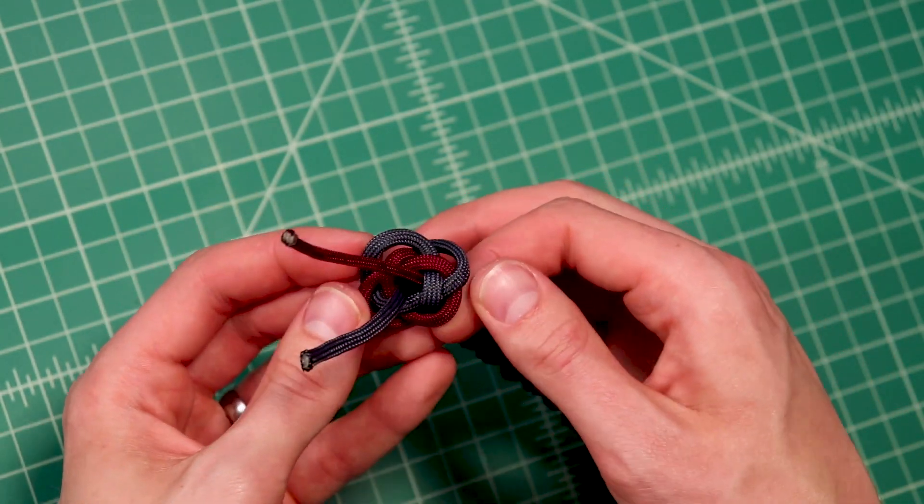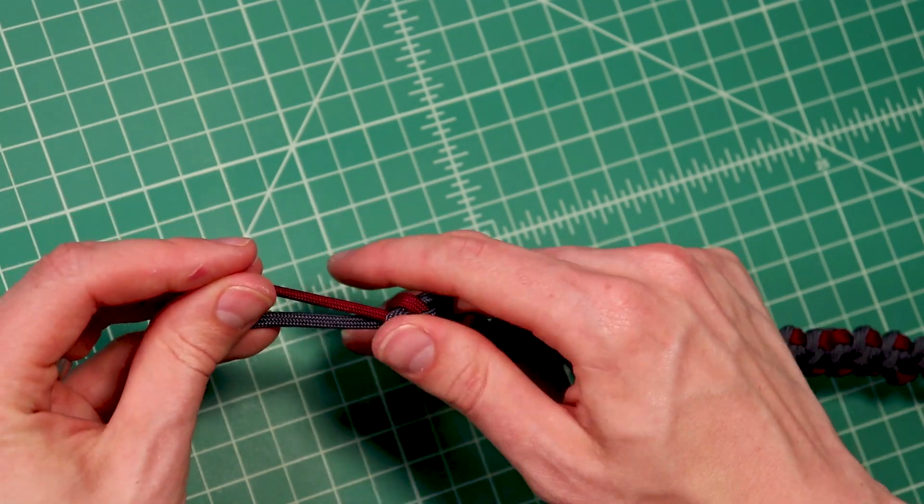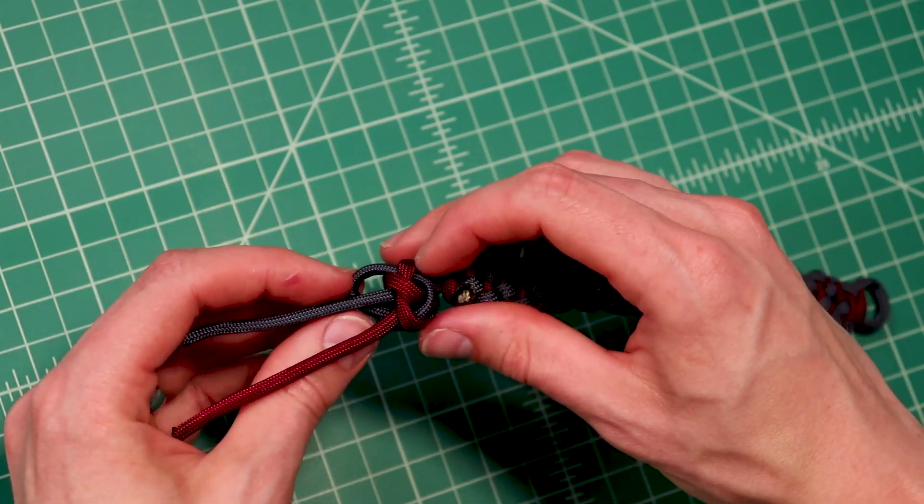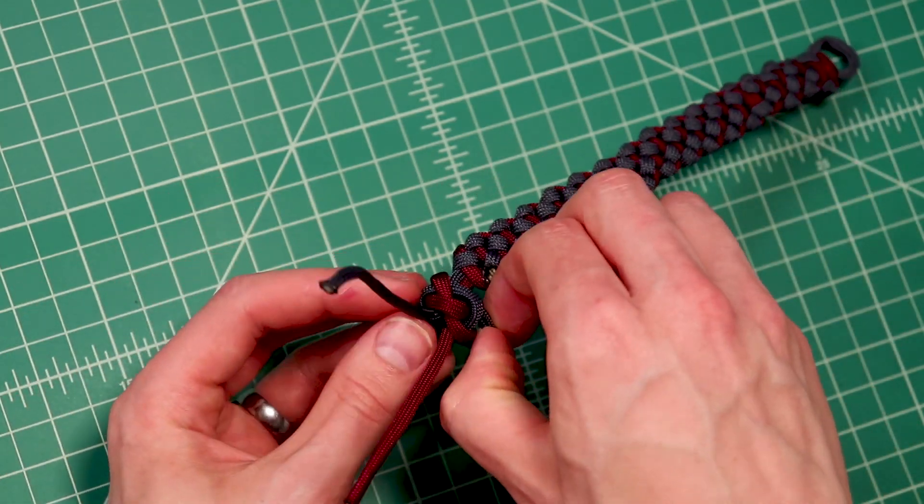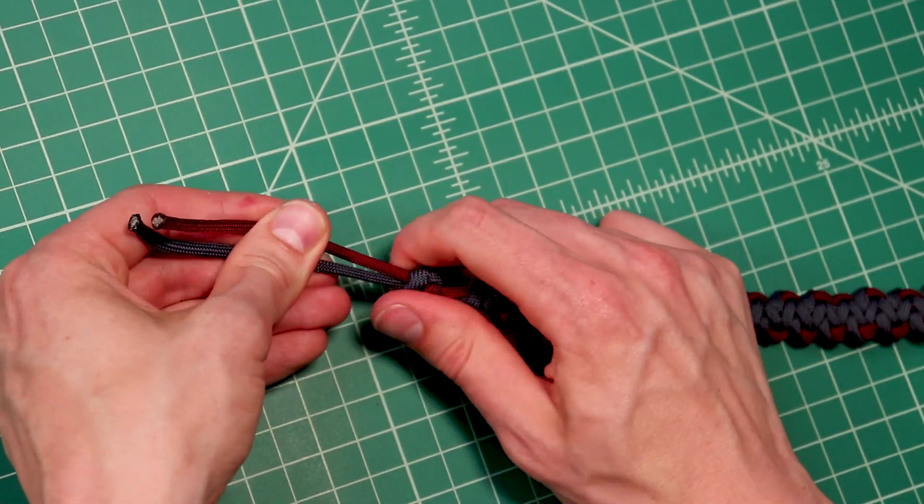Then it'll look like this. You just want to gradually tighten that down. It's not going to seal if you don't tighten it properly. So just do it slowly and it should end up right. But if it doesn't, then you can start over and re-tie it.